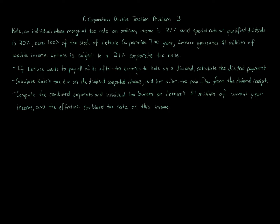C Corporation Double Taxation Problem 3. Kale, an individual whose marginal tax rate on ordinary income is 37% and special rate on qualified dividends is 20%, owns 100% of the stock of Lettuce Corporation. This year, Lettuce generates $1 million of taxable income. Lettuce is subject to a 21% corporate tax rate. If Lettuce wants to pay all of its after-tax earnings to Kale as a dividend, calculate the dividend payment. Calculate Kale's tax due on the dividend and her after-tax cash flow from the dividend receipt. Compute the combined corporate and individual tax burden on Lettuce's $1 million of current year income and the effective combined tax rate on this income.